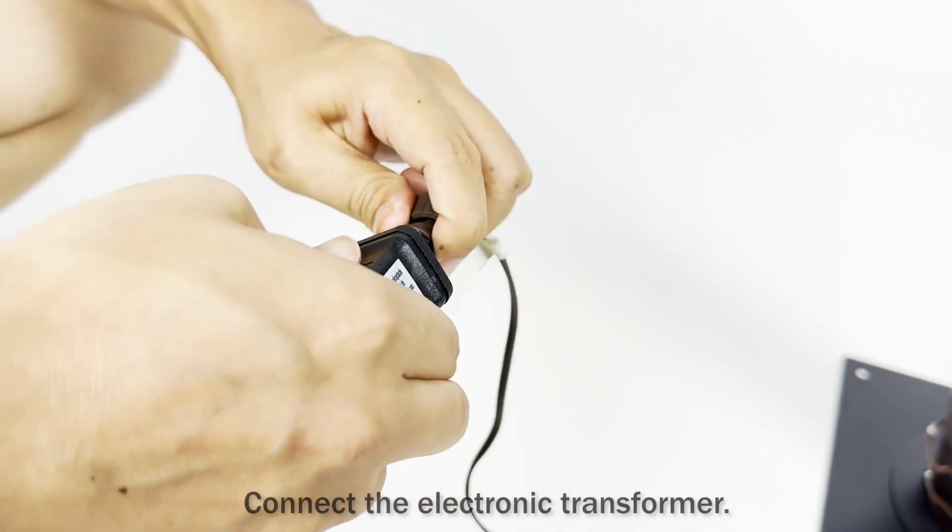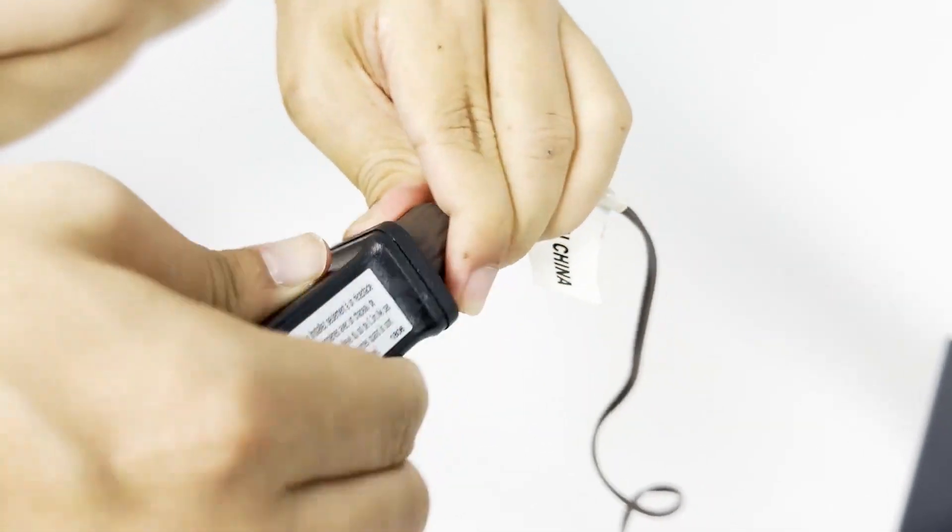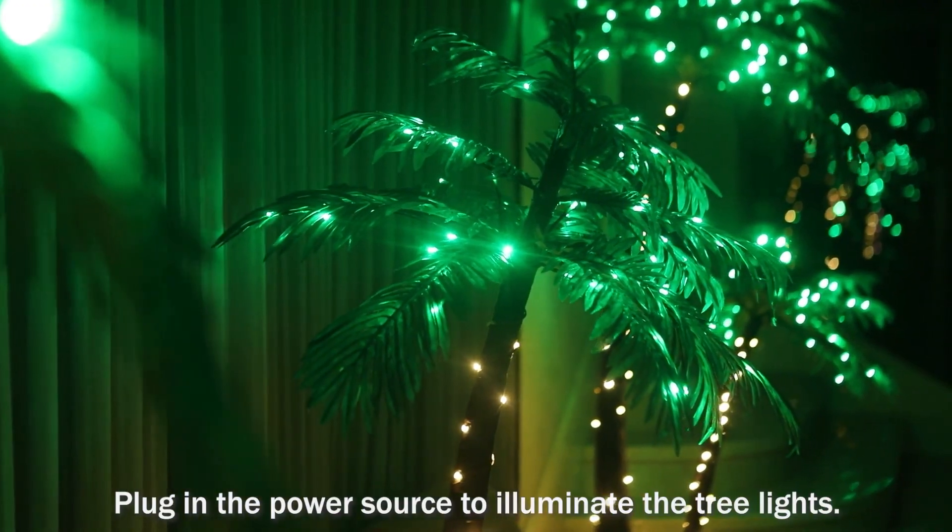Connect the electronic transformer and plug in the power source to illuminate the tree lights.